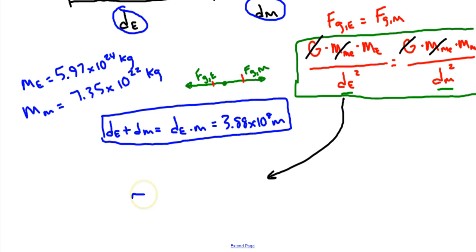We'll start plugging some things in. Mass of the Earth first: 5.97 times 10 to the 24th kilograms over distance from the Earth. First, I'm going to use this equation here to say the distance from the Earth is equal to 3.88 times 10 to the 8th minus the distance to the Moon, and that's squared.